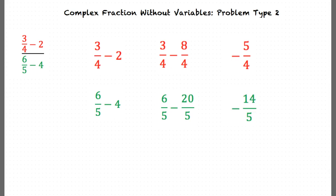Now we can rewrite the numerator and the denominator. This gives us negative 5 over 4 divided by negative 14 over 5. We now simplify the expression by multiplying the numerator by the reciprocal of the denominator. The reciprocal is the number that, if multiplied by the original value, would give you 1. This gives us negative 5 over 4 times negative 5 over 14. Now we multiply the expression out, which gives us 25 over 56.